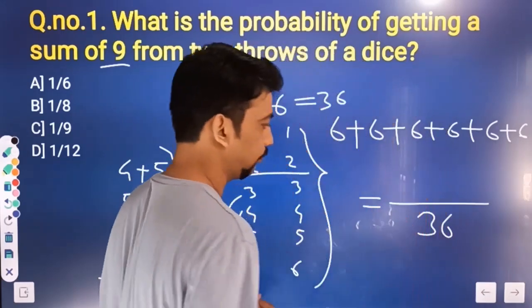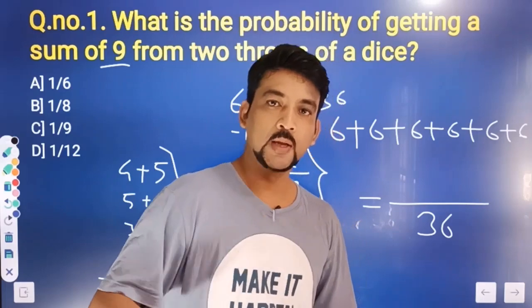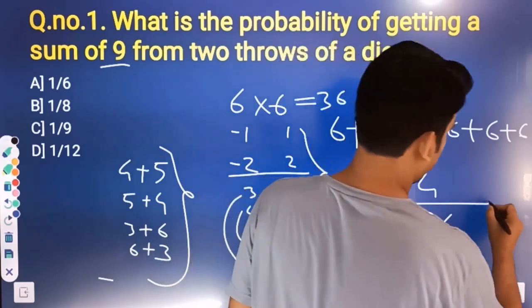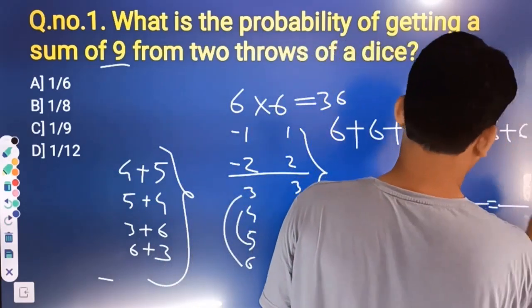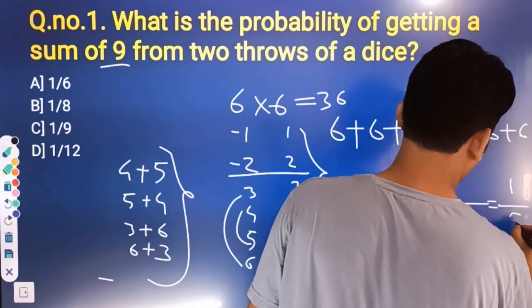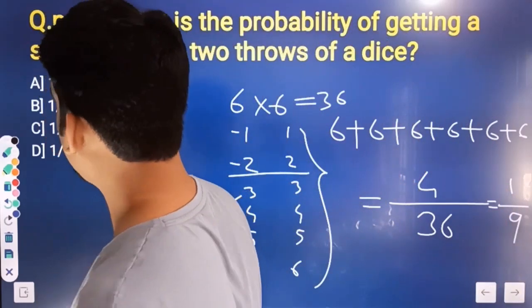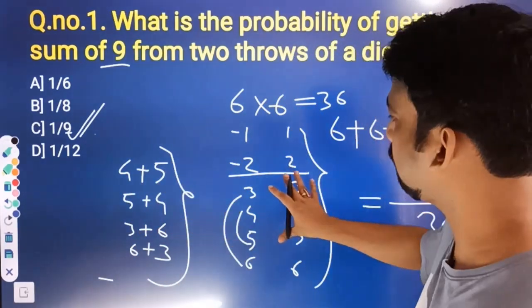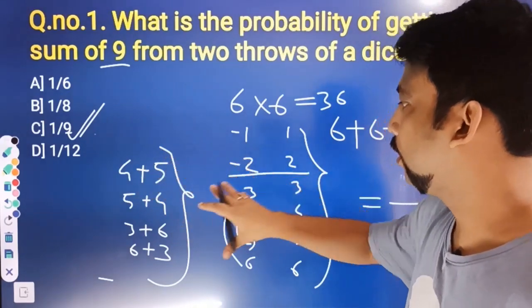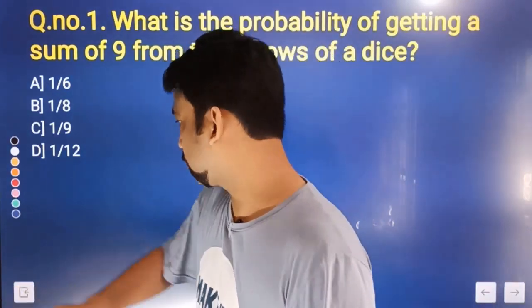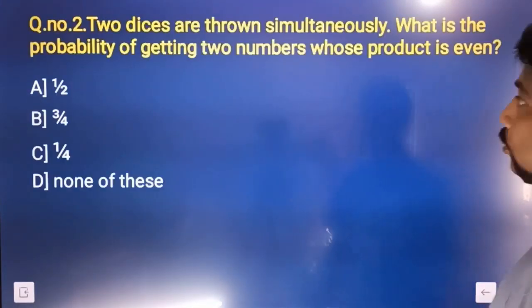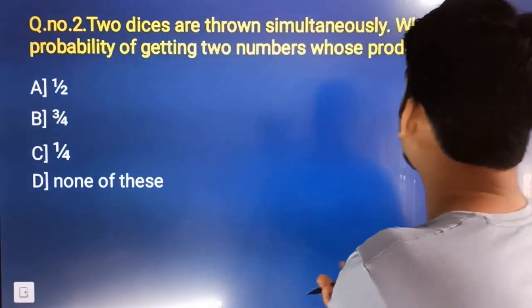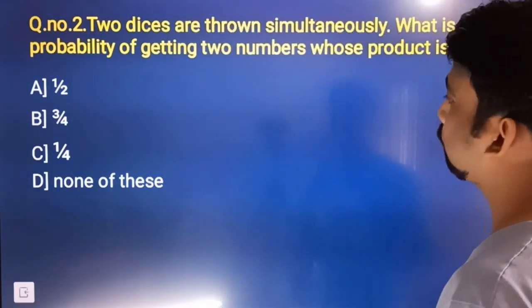So the answer of this question is 4 by 36. What is the probability of getting 2 numbers whose product is even?